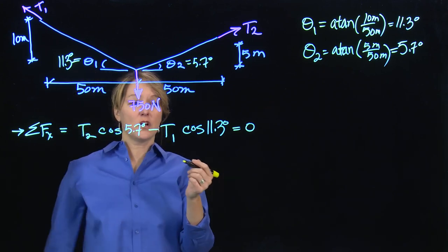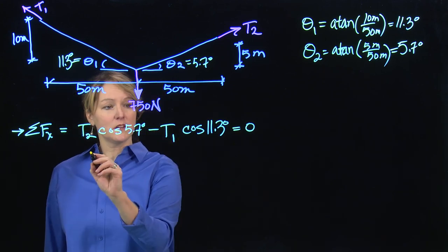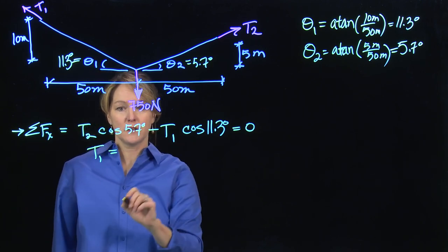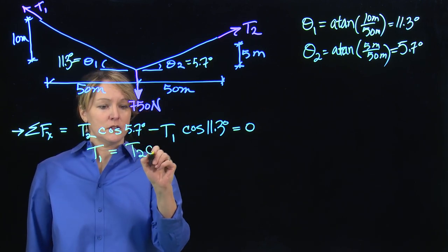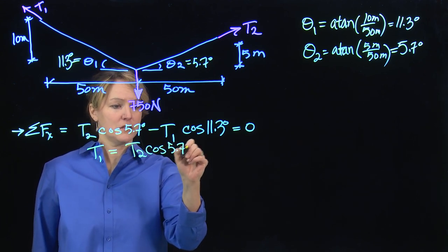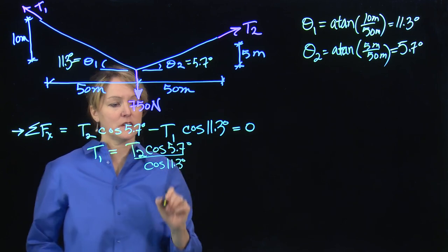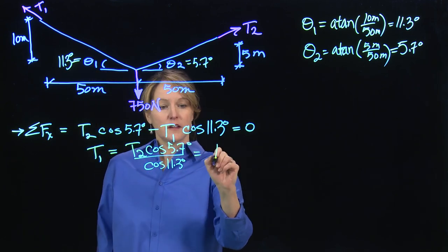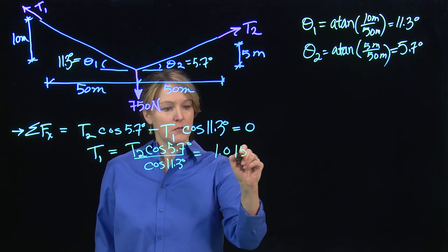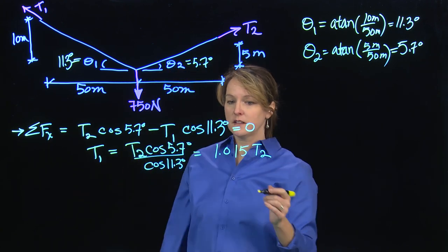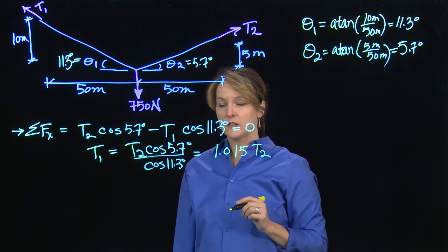So I can't solve for any one directly, but I'm going to put one in terms of the other. I'm going to solve for T1, since that happens to be the bigger one. That's T2 cos 5.7 degrees over cosine of 11.3, just solving this equation. And that turns out to be 1.015 times T2. So they're very close, but they're slightly different, and I will take that into consideration.